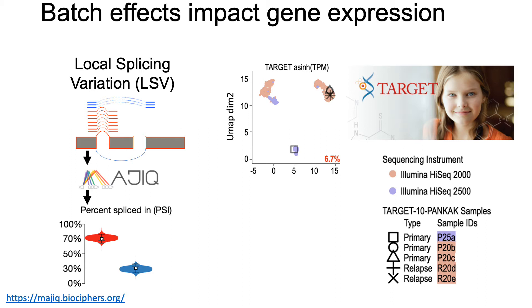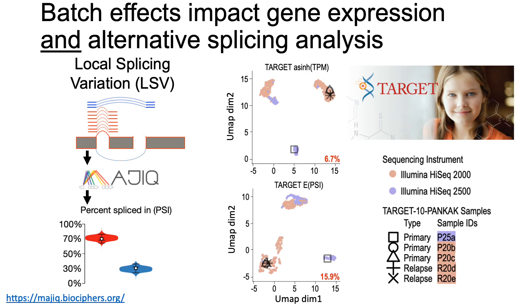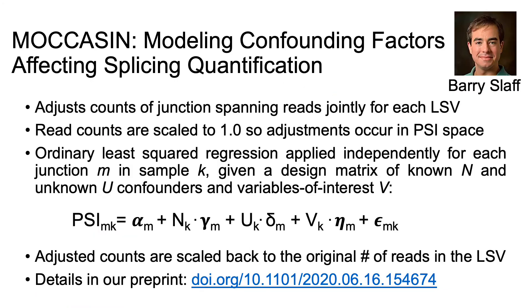When we look at this data quantified for splicing, perhaps unsurprisingly, we see this same batch effect in the splicing analysis too. In fact, it is quantitatively more of a problem because the total variation in PSI attributable to this batch effect is 15.9%, which is over two times more than the batch effect we see in gene expression. So, to address confounding factors in splicing, a former graduate student in Yosef's lab, Barry Slaff, developed MOCCASIN.